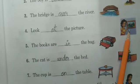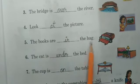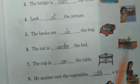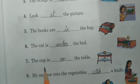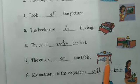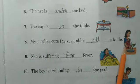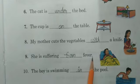Look at the picture. Five: the books are in the bag — books bag mein hain. Six: the cat is under the bed — cat bed ke niche hai, to niche ke liye hum 'under' lagate hain. Seven: the cup is on the table — cup table ke oopar hai, oopar ke liye 'on' lagate hain. Eight: my mother cuts the vegetable with a knife. Nine: she is suffering from fever — woh bukhaar se peedit hai, 'se' ke liye 'from' lagate hain. Ten: the boy is swimming in the pool.